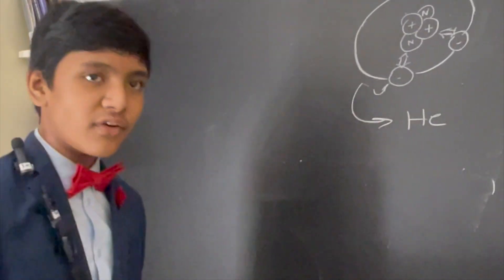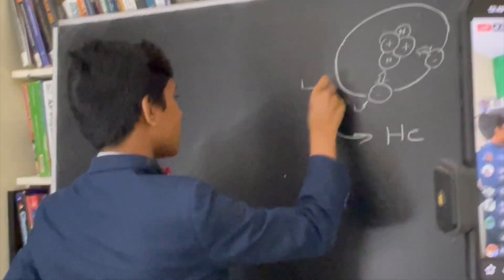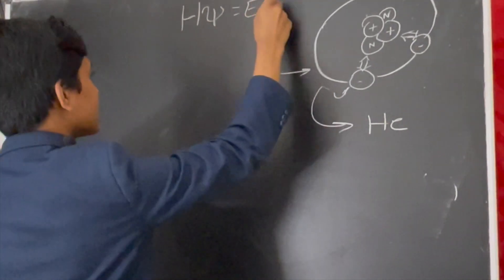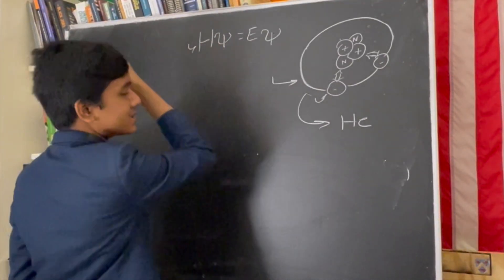But that's fine, right? In this case, all you have to do is solve the equation H-phi equals E-phi for some Hamiltonian H, and for some energy level E.